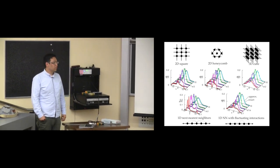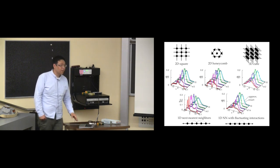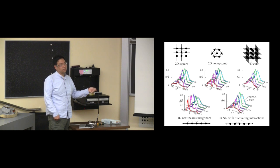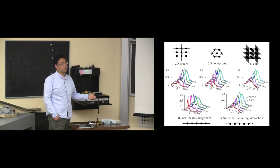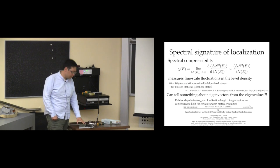It turns out that the reason why the free probability approximation is so good has to do with how well the free probability answer approximates the moments of the matrix. There's an argument in terms of deviations of moments.